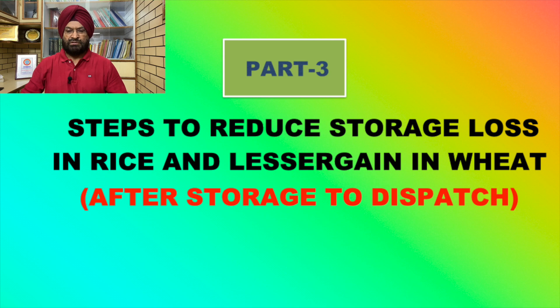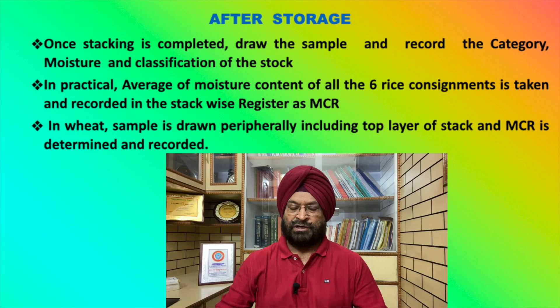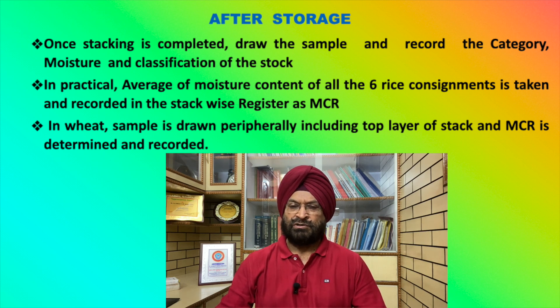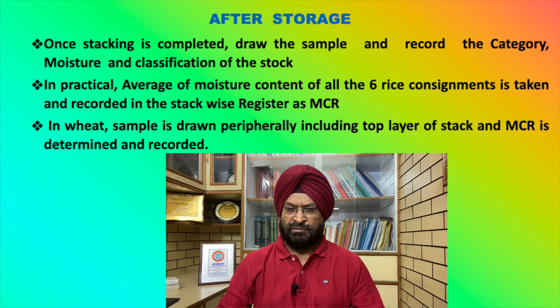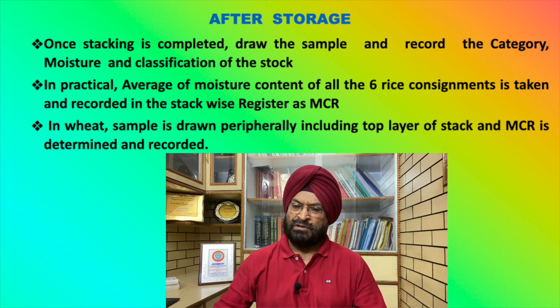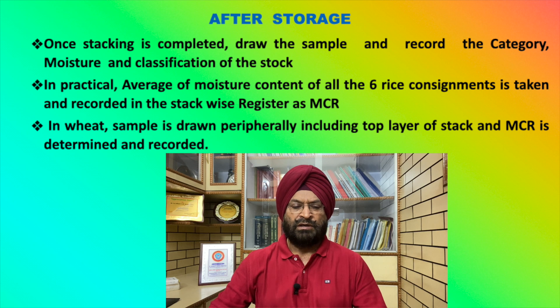First, after the stocks are stored and the stack is completed, draw the sample and record the category, classification, and moisture content of each individual stack in your stack-wise register. In practice, an average moisture content is taken for the stack by considering the moisture content of individual rice consignments. In wheat, the sample is drawn peripherally including the top layer, and the moisture content recorded is written as MCR.